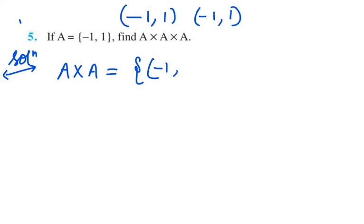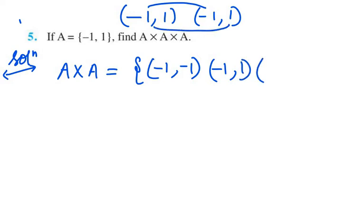So A cross A will be: minus 1 with minus 1, then minus 1 with 1, then 1 with minus 1, then 1 with 1. So this will be A cross A.